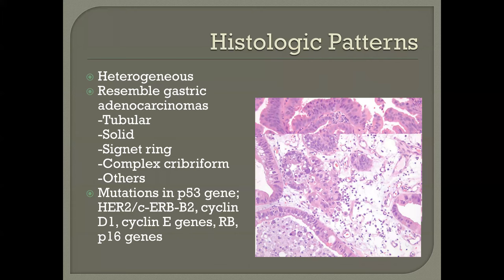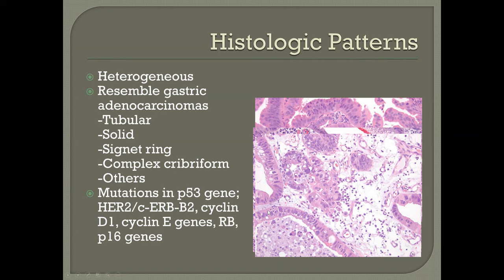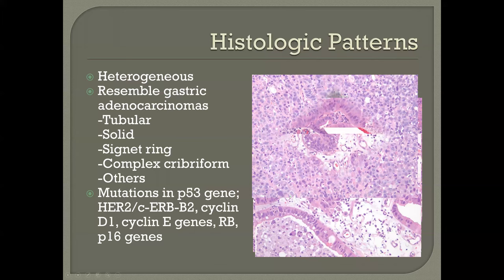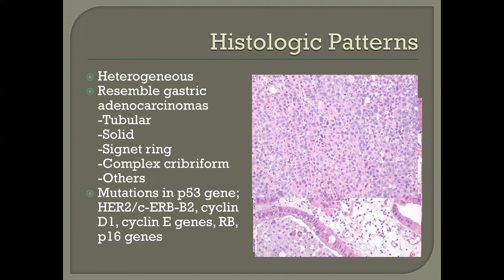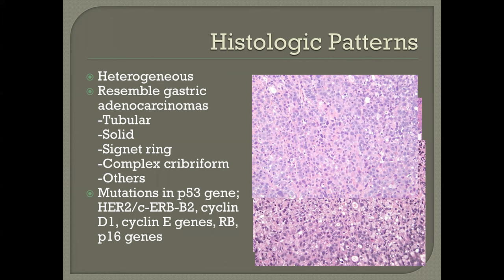Adenocarcinomas of the esophagus tend to be somewhat heterogeneous and resemble gastric adenocarcinomas in classification and molecularly. There are p53 mutations; HER2 mutations are fairly common and can be used in treatment. Similarly, cyclin D1, cyclin E genes, retinoblastoma gene, and P16 genes may be mutated. Diffuse-type lesions can be seen in these cases. Let's go on to discuss what predicts metastasis.